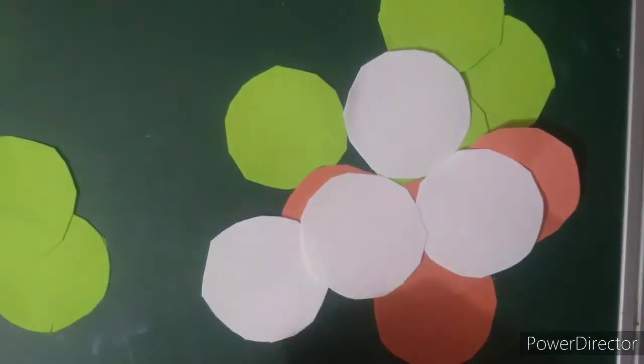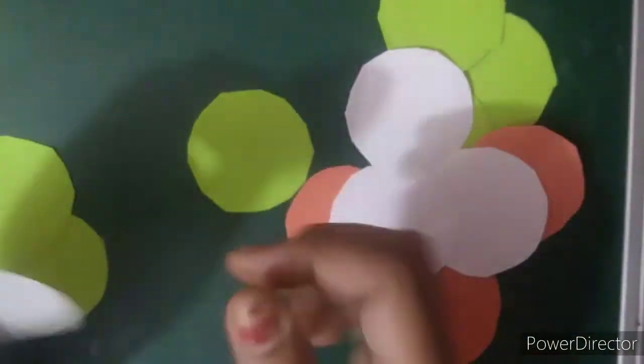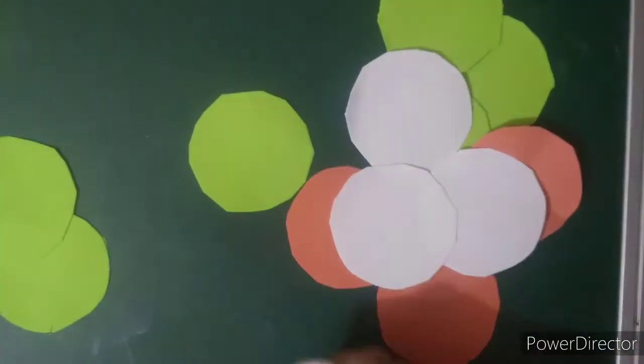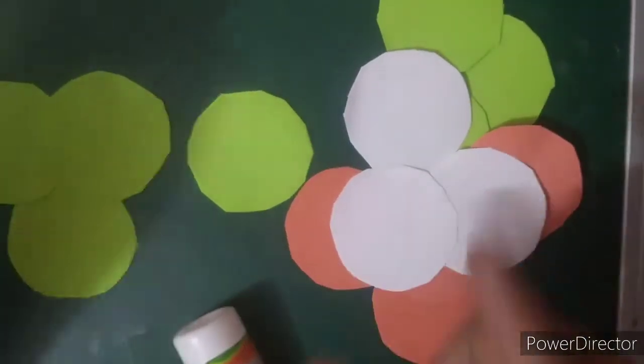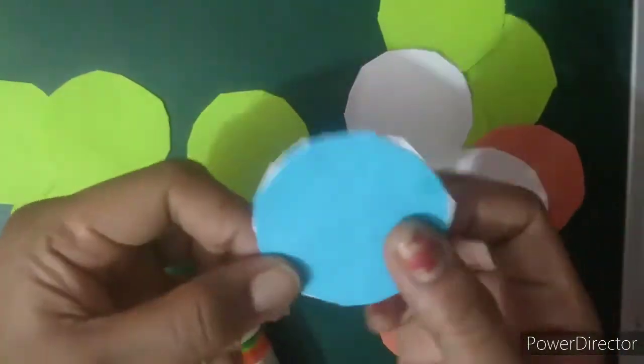Now I will stick a blue sheet on a white circle. I will cut 5 circles of white so that it will get thicker.